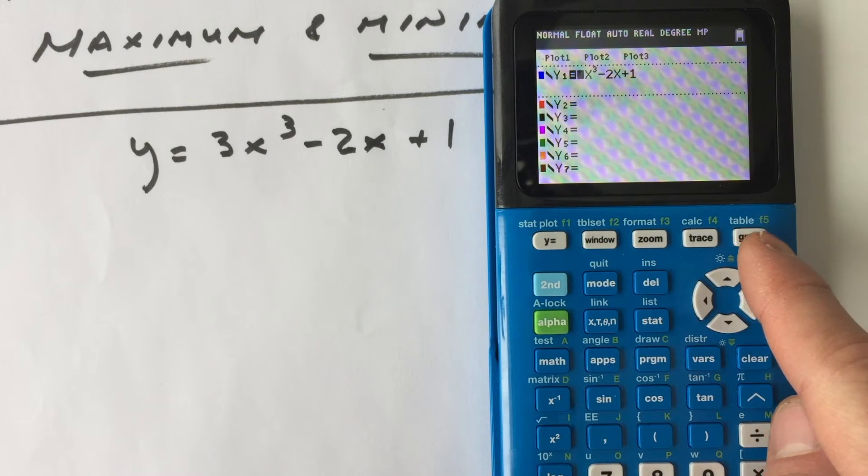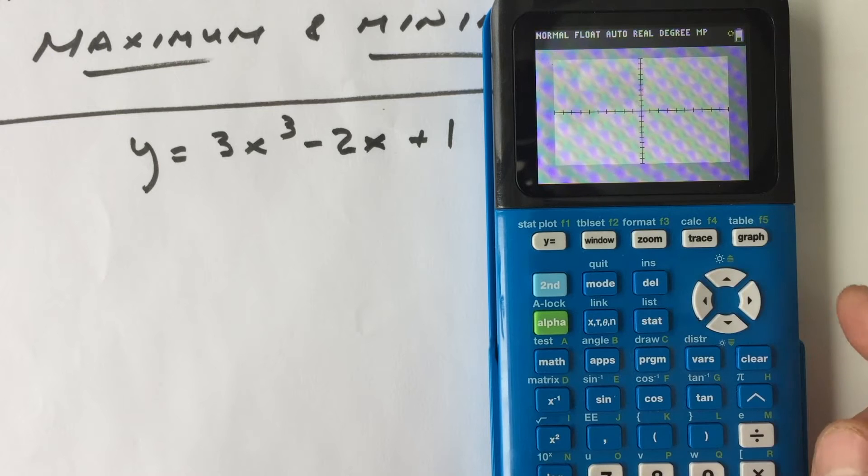Then we're going to go over here to the upper right-hand corner where it says graph. Press graph, and let's go ahead and see what that graph looks like. So that's pretty good.